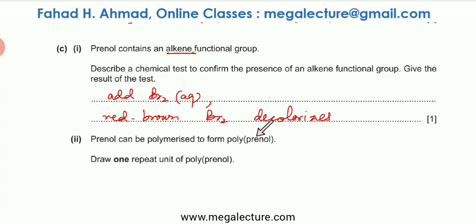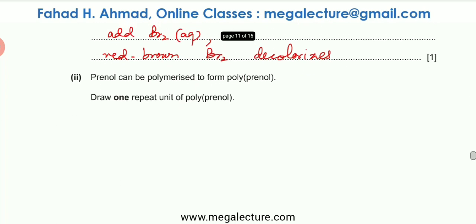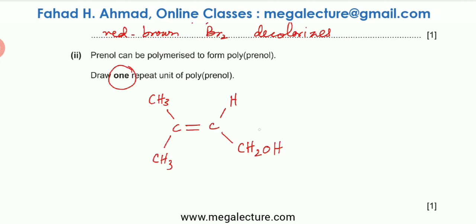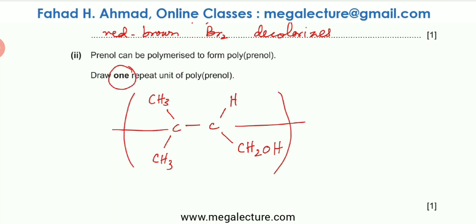Prenol can be polymerized to form polyprenol. In polymerization, the double bond breaks and molecules of Prenol bond with each other — the same molecule repeats, attached on the right and left. This gives the repeat unit of polyprenol.